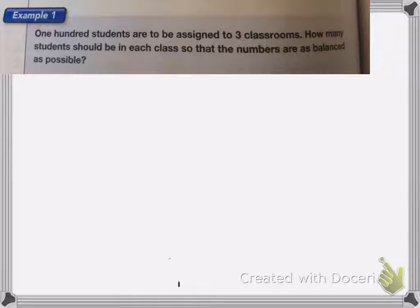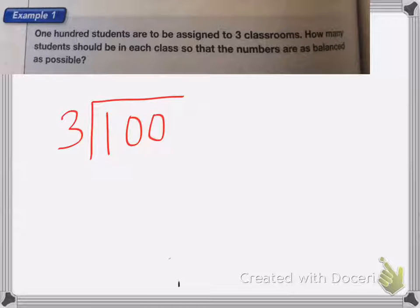Here we have 100 students are to be assigned to three classrooms. How many students should be in each class so that the numbers are as balanced as possible? So I have 100 students and I'm dividing them up into three classrooms. So I'm going to divide first.